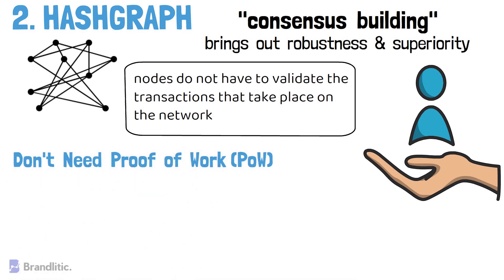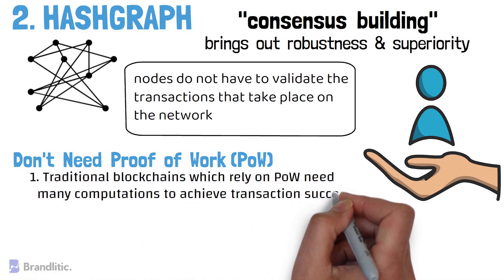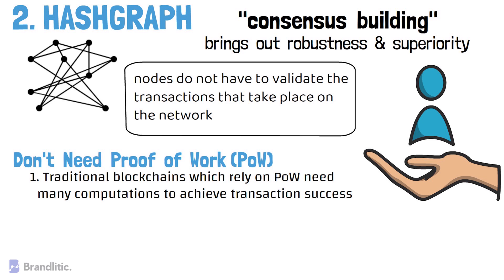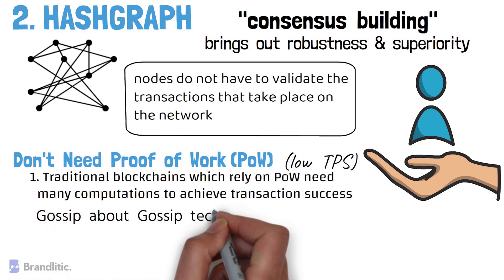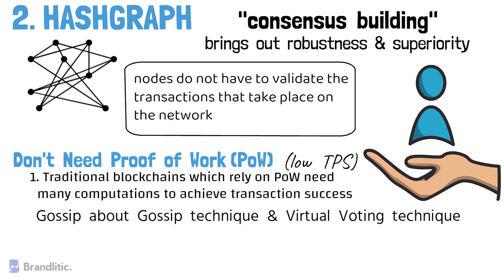Because of this consensus-only approach, nodes do not have to validate transactions individually, and users do not have to present any proof of work. This eliminates the need for the heavy computation that traditional blockchains rely on, which makes transactions bulky and results in very slow TPS ratios. On the contrary, hashgraph only requires nodes to achieve consensus through the gossip about gossip technique and the virtual voting technique.